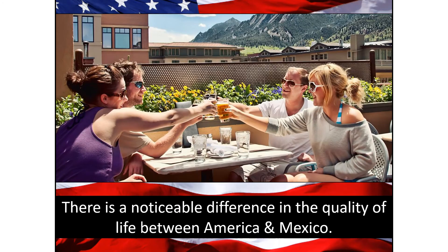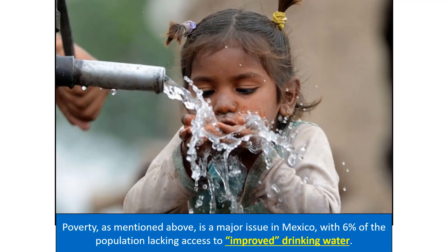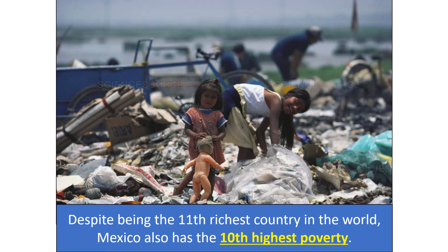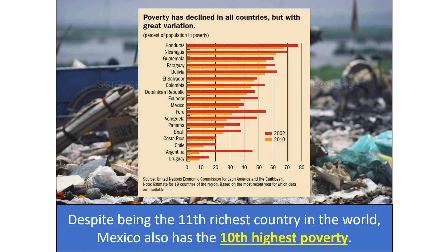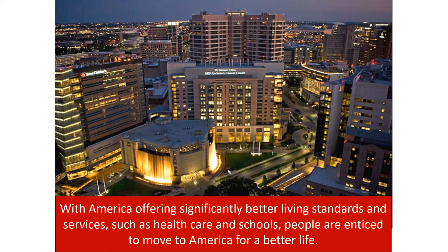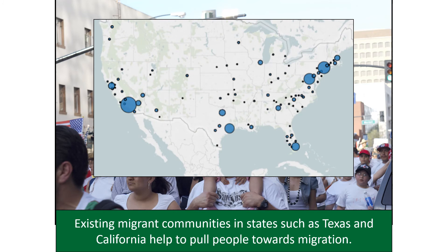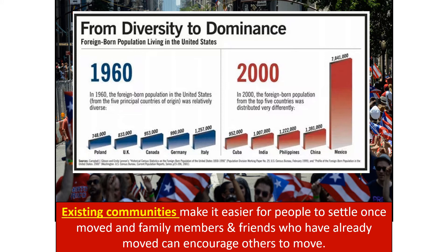Reasons for migration — pull factors. There's a noticeable difference in quality of life between the US and Mexico. Poverty is a major issue in Mexico, with 6% of the population lacking access to drinking water, and Mexico's infrastructure is severely undeveloped compared to the US. Despite being the 11th richest country in the world, Mexico has the 10th highest poverty rate. With the US offering significantly better living standards — including healthcare and schools — people are enticed to move. Existing migrant communities in Texas and California also pull people, knowing there's already a large community of the same culture.